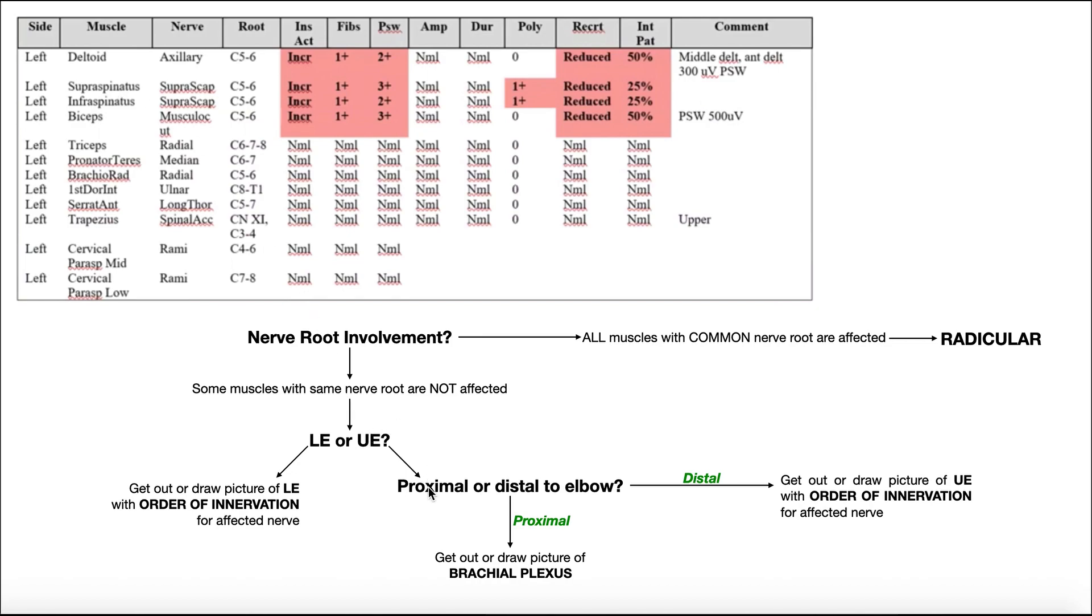Once we know that, we can ask, does the damage appear to be proximal to the elbow or distal to the elbow? Now the reason this is important is because once we get to a point beyond the elbow, the brachial plexus has already divided into its terminal branches. There really is no brachial plexus anymore.